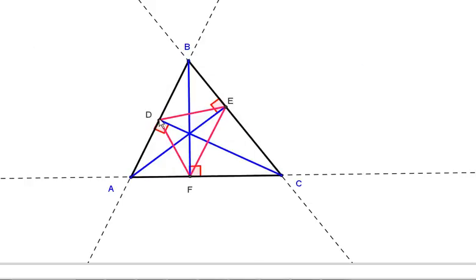Thus, triangle DEF, the red triangle that you see, let's get rid of the altitudes so we don't get confused. There we go. It's called the orthic triangle.